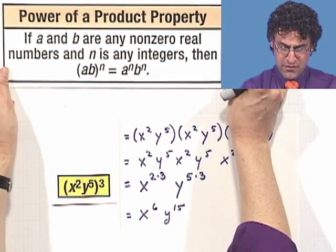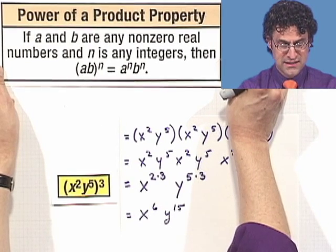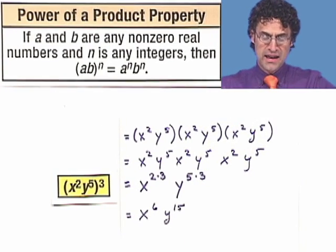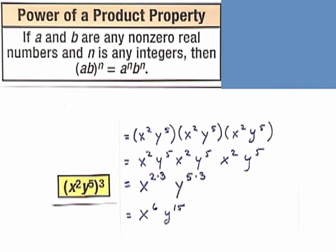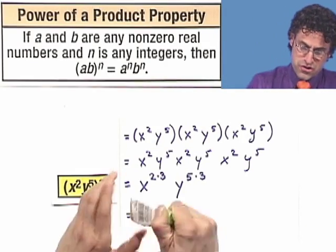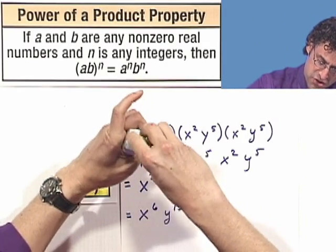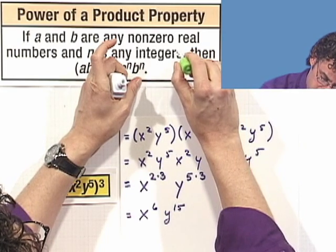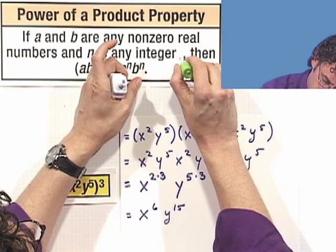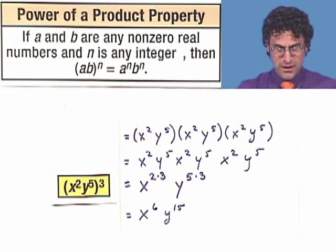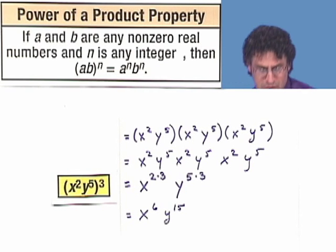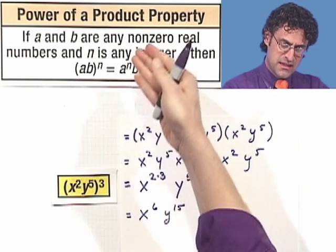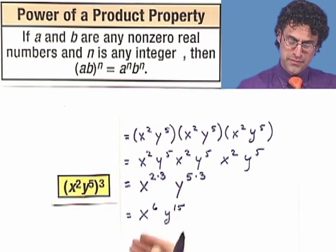The power of a product property. It says that if you have a and b being any non-zero real numbers, and n is any integer, then the quantity a times b, all raised to the n, will actually equal a to the n times b to the n.